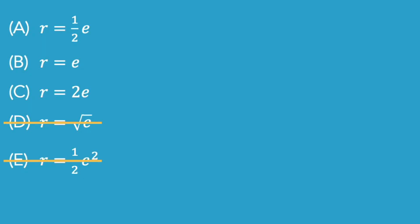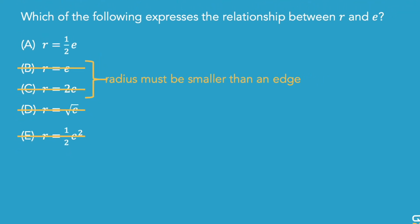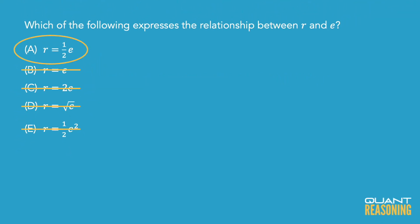And then if you look at the remaining answer choices, A, B, and C, the only one that makes sense in those three is A because the radius has to be smaller than the edge. Can you imagine a situation in which the radius of the sphere is longer than the edge of the cube given that the cube contains the sphere inside of it? That's nonsensical. So since A is the only answer choice among the remaining three that shows that r is smaller than e, I'd go ahead and pick that one and move on to the next question.